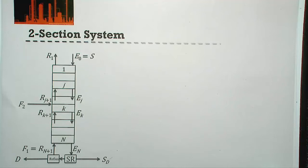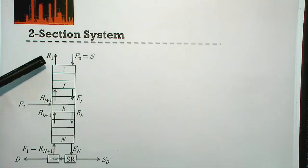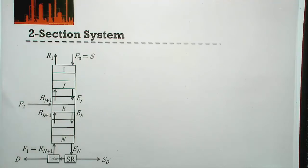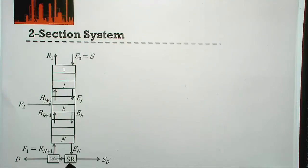Here we have essentially a design of a typical two-section system. You'll notice we've got our raffinate and a solvent. We've got our feed, but our feed is now coming into the middle of the stages in our column rather than at one end of our column. Then we have an extract product, but what we do is we then do some solvent recovery — another separation step where we separate our solvent from our extract.